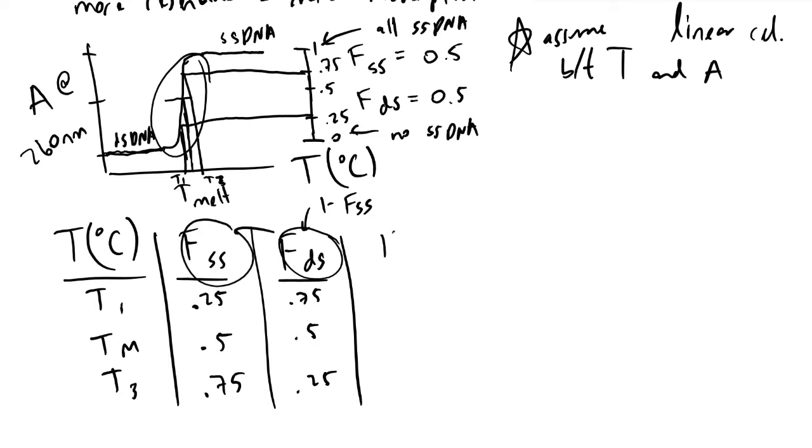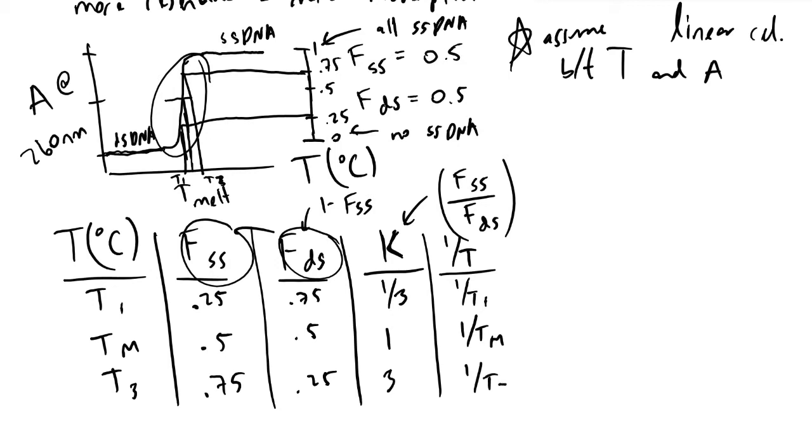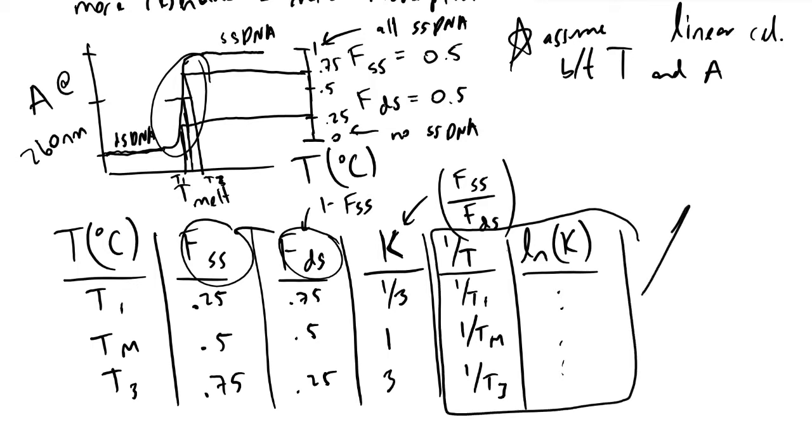With these fractions, we can now find what the equilibrium value K is as a function of temperature, which is the key takeaway from this. K, as I'll recall earlier, was defined to be the fraction of your products—in this case, the fraction of single-stranded DNA divided by the fraction of double-stranded DNA. What these values will correspond to would be one-third, one, and three. We would, in Excel for instance, generate another column, one over T, and let that be equal to one over T1, one over TM, and one over T3. We also want to plot the natural log of our equilibrium constant K, and so that would have unique values assigned to that. With these two final rows, we would generate our plot with one over temperature on the X-axis, as well as the natural log of K on the Y-axis.